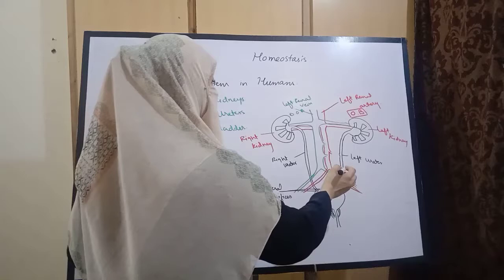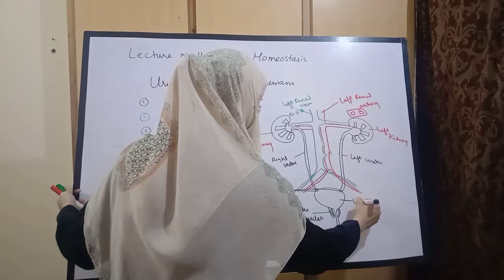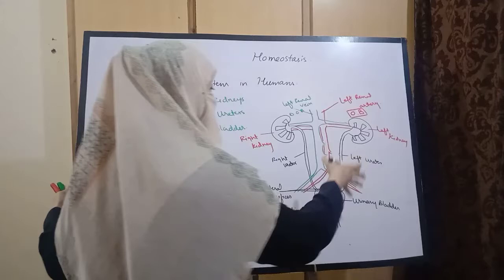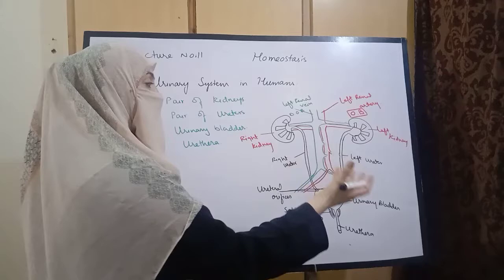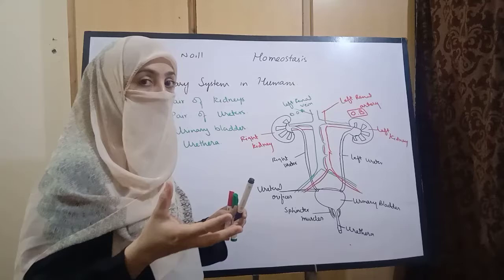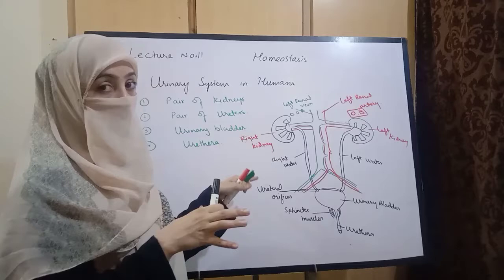یہ دو orifices ہیں — plural میں ureteral orifices کہیں گے۔ پھر ہمارے پاس ہیں sphincter muscles جو urinary bladder میں urine کو control کرنے کے لیے function perform کرتے ہیں۔ اور urine کو urethra سے body سے outside لے جاتا ہے۔ Urinary bladder میں urine کو کتنی دیر store کیا جا سکتا ہے وہ یہ sphincter muscles control کرتے ہیں۔